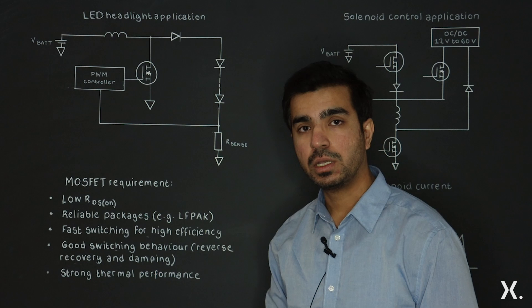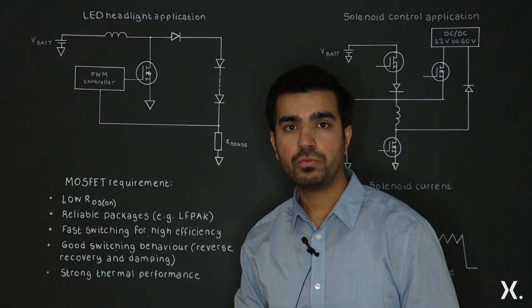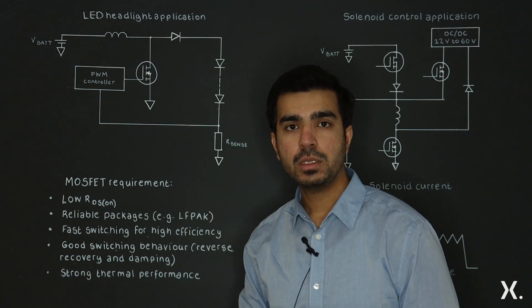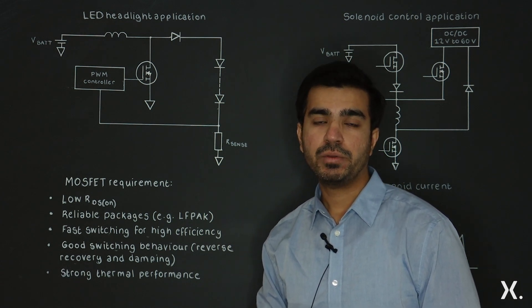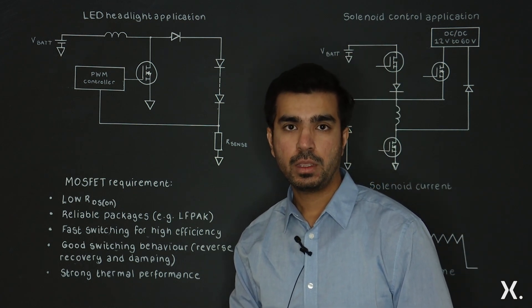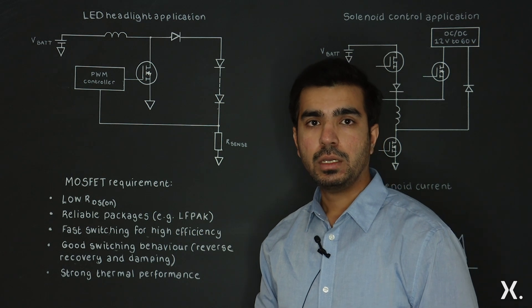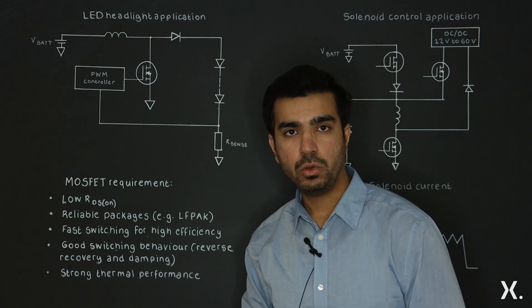Of course, losses are important here. Let's take an example of 200 kilohertz. For that, switching time needs to be very fast so that we have low switching losses. And for the conduction losses, of course, conduction losses should be very low. For that we will use reduced RDS(on) MOSFET.